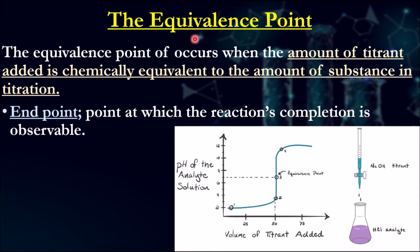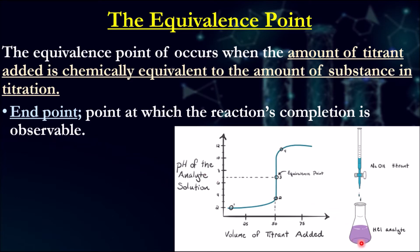The use of titration is to find the equivalence point — the point at which the amount of titrant is equivalent, chemically speaking in terms of number of moles, to the solution you're trying to investigate. The endpoint is slightly different from the equivalence point. The equivalence point is where the reaction's completion becomes observable, such as a color change if using an indicator. Equivalence point is where we have equal amounts; endpoint is when we observe that occurring.